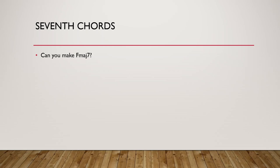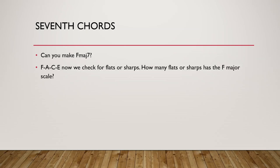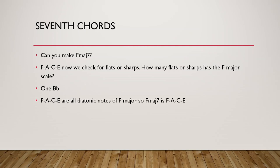Can you make F major 7th? F major 7 will be F, G, A, B, C, D, E — and now we check for flats or sharps. F major has 1 flat, which is B flat. So F, A, C, and E are all diatonic notes of the F major scale. Therefore F, A, C, E is F major 7th.